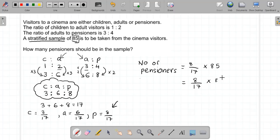85 and 17 both come in the 17 times table, so 17 goes into 17 once, and it goes into 85 five times. And I can multiply 8 × 5, which is 40. So we have 40 pensioners in the sample size.